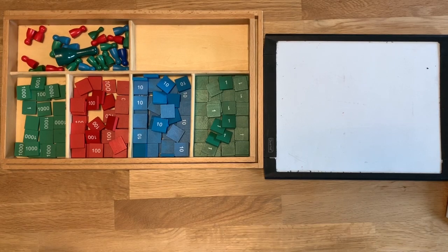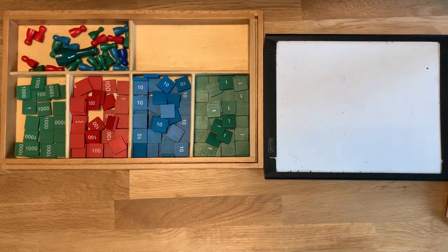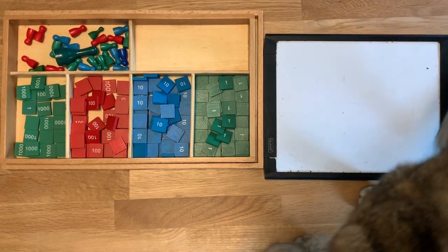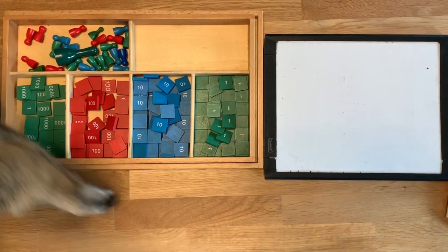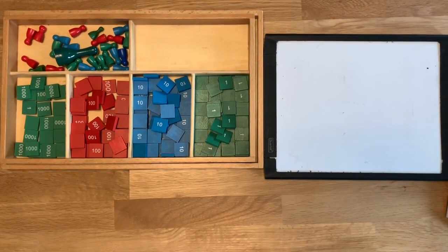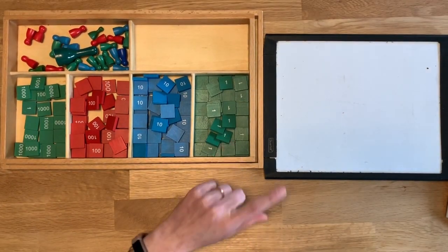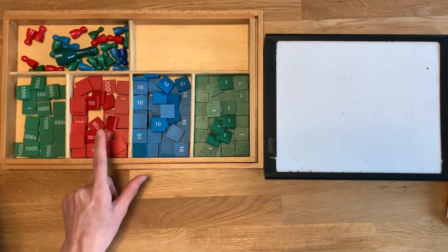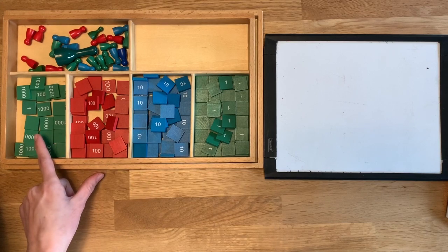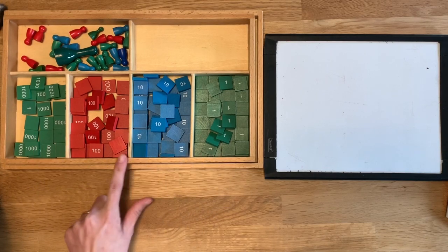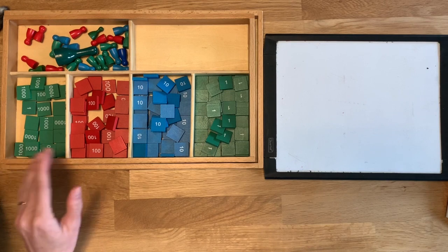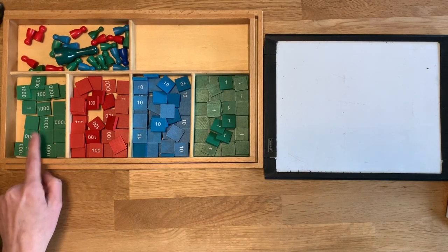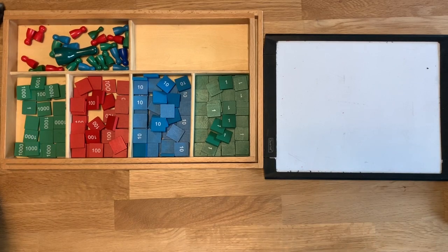That means the top number is sometimes going to be smaller than the bottom number and it means we have to borrow from the neighbor. You can only borrow from the neighbor that's on the left. So the units can only borrow from the tens, the tens can only borrow from the hundreds, and the hundreds can only borrow from the thousands. Because we only have four place values with this stamp game, we can't do anything higher than 1,000. So the 1,000 will always have a bigger number on top.